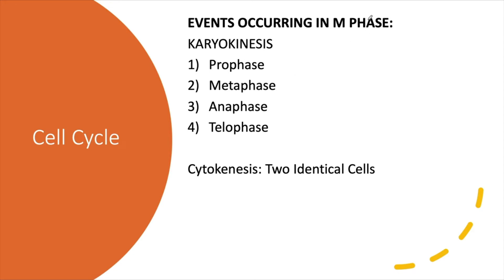Now we are in M phase. M phase consists of two sub-phases: karyokinesis and cytokinesis. Karyokinesis has four sub-phases. In prophase, chromatids coil, the nuclear membrane and nucleolus start to disintegrate, and spindles form. In metaphase, chromosomes orient at the equatorial plane. In anaphase, chromatids are pulled to opposite poles. In telophase, now that the chromatids are at opposite poles, the daughter nuclei begin to reconstruct and the cleavage furrow starts to form — at this point the cell is elongated and looks like a football.